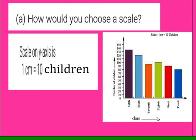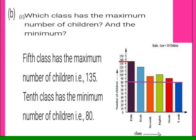Subdivision A: how would you choose a scale? For the y-axis we chose a scale of 1 cm = 10 children. Subdivision B: which class has the maximum and minimum number of children? From the bar graph, 5th standard has the maximum number of children (135) and 10th class has the minimum (80).